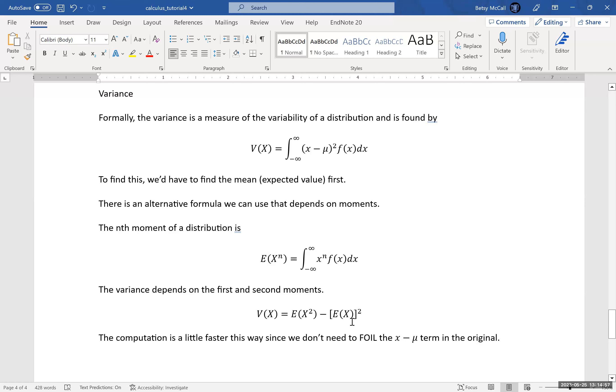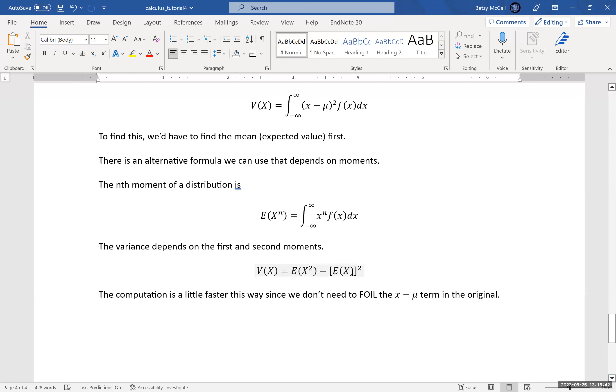But the variance is going to depend on both the first and the second moments. And it can be shown that the variance can be calculated using the second moment minus the first moment squared. That is going to be a much faster way of doing the calculation for the variance. Both problems require you to find the mean first, but the (x - μ) term is squared here, so you would have to foil it out. Whereas in this example, you're just calculating x² times the whole function, so there's no foiling and distributing that you have to worry about.